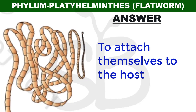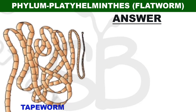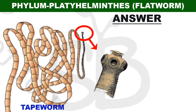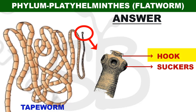They are living inside the body. For example, tapeworm or Taenia. This tapeworm lives inside the body. There are two structures: one is hooks, and two are suckers. These hooks are used to attach inside the intestine.